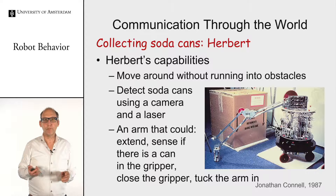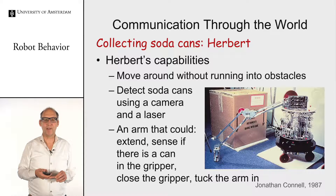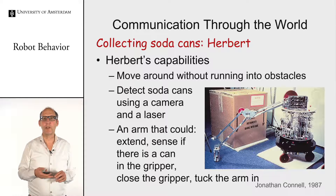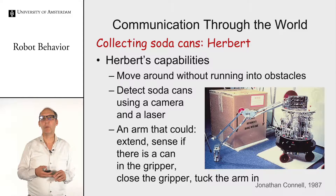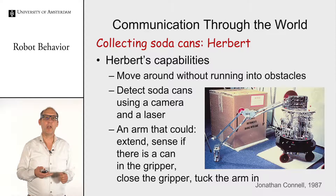This was also tested by Cornell on real robots. One example is the robot Herbert, which was designed to collect soda cans. It was able to move around without hitting obstacles, find soda cans, pick them up, and bring them to the waste bin.